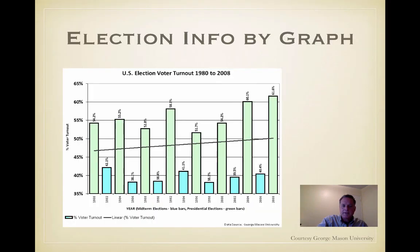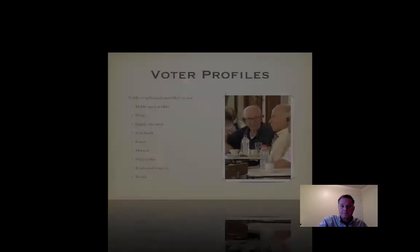Looking at the election turnout graph from 1980 to 2008, we can see the mean has slightly increased for presidential election turnout in 2008, then it lowered in 2012. It's very difficult to get back to the 1940–1950 range of turnout. The blue bars representing midterm elections are rather low compared to the green presidential election year turnout bars.